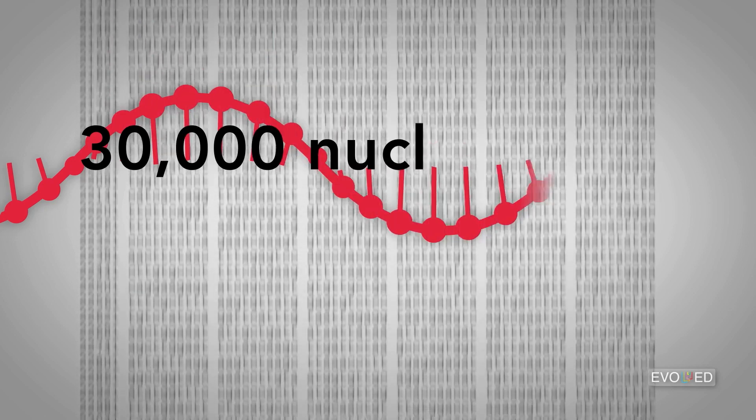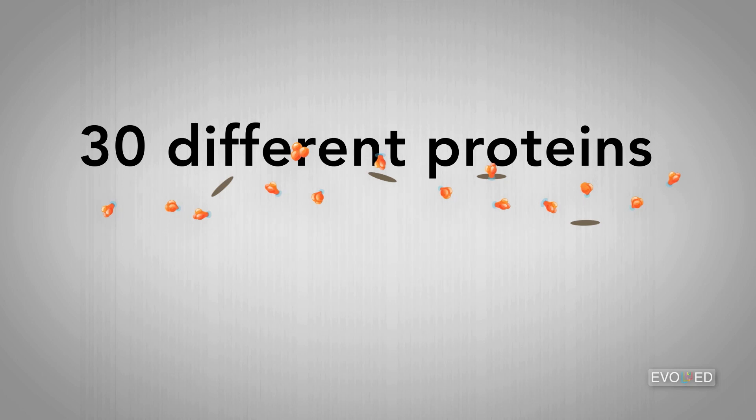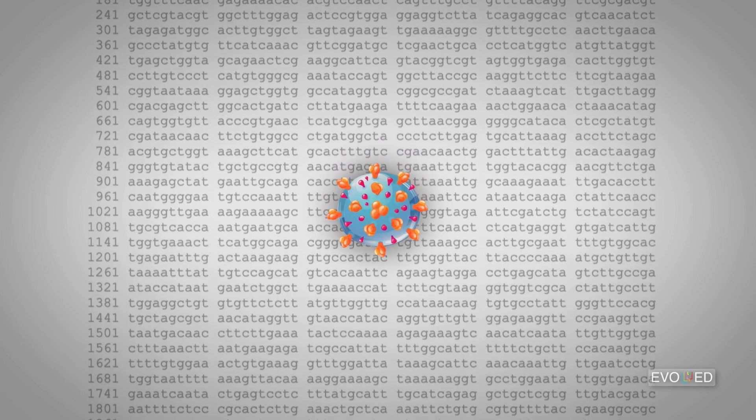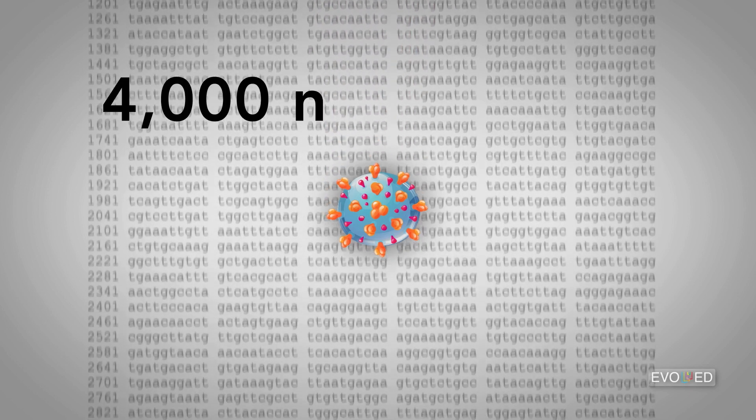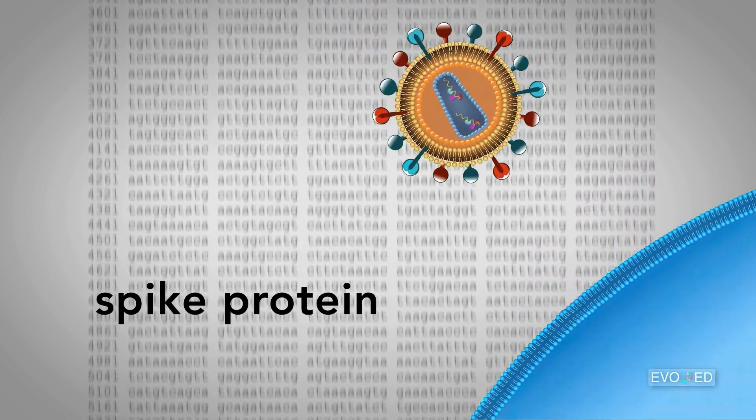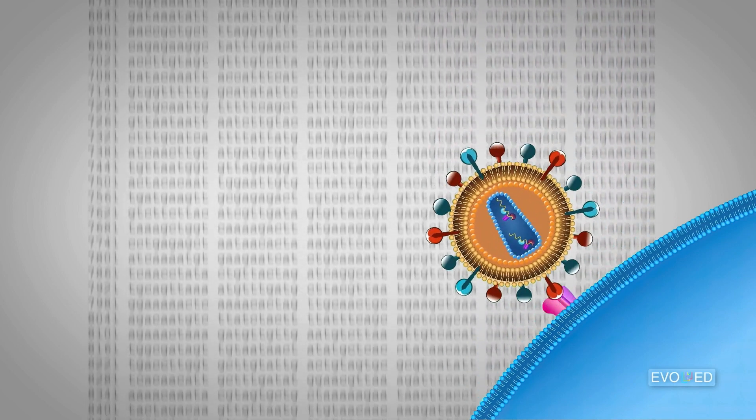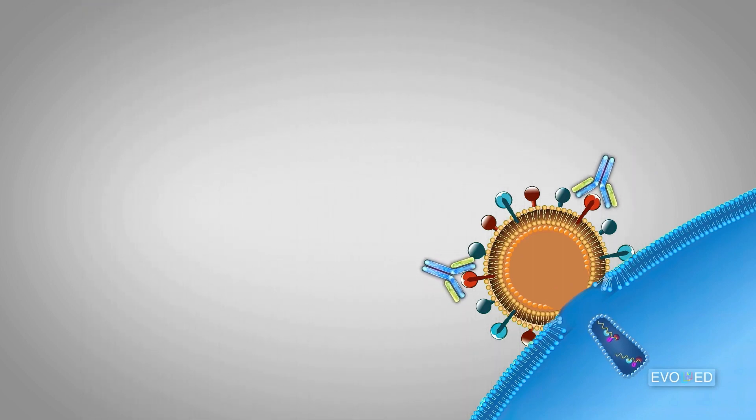These 30,000 nucleotides code for about 30 different proteins that are synthesized in varying quantities. Those proteins, once synthesized, all come together to form the virus particle. A small section of this 30,000 nucleotide genome, a stretch of just under 4,000 nucleotides, carries the genetic instructions for the spike protein. The spike protein allows the virus to gain entry to a cell. And the spike protein is what antibodies interact with to neutralize a virus particle.